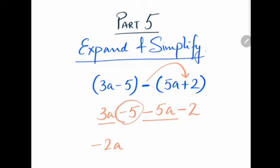Again collecting the like terms: 3a minus 5a is minus 2a, and minus 5 minus 2 becomes minus 7.